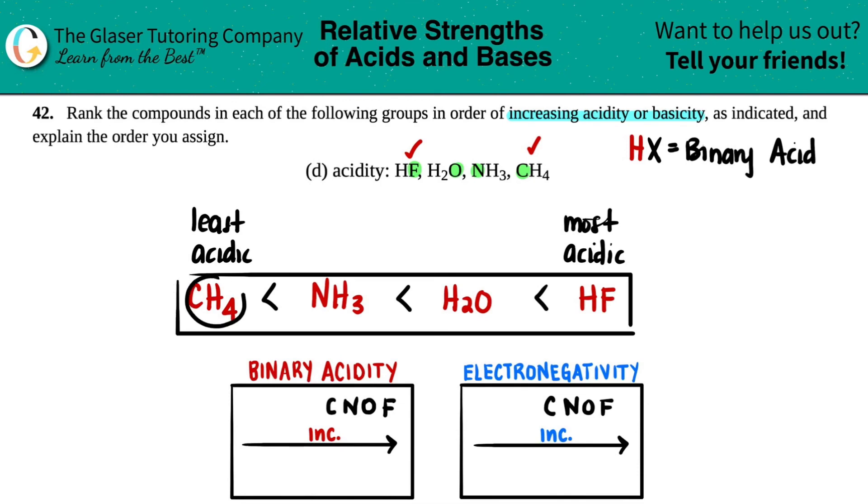Carbon wouldn't really necessarily want to give up any of those four hydrogens. So we could just say that increasing electronegativity from left to right will also increase acidity. And remember, this is for binary acids. So that's it.